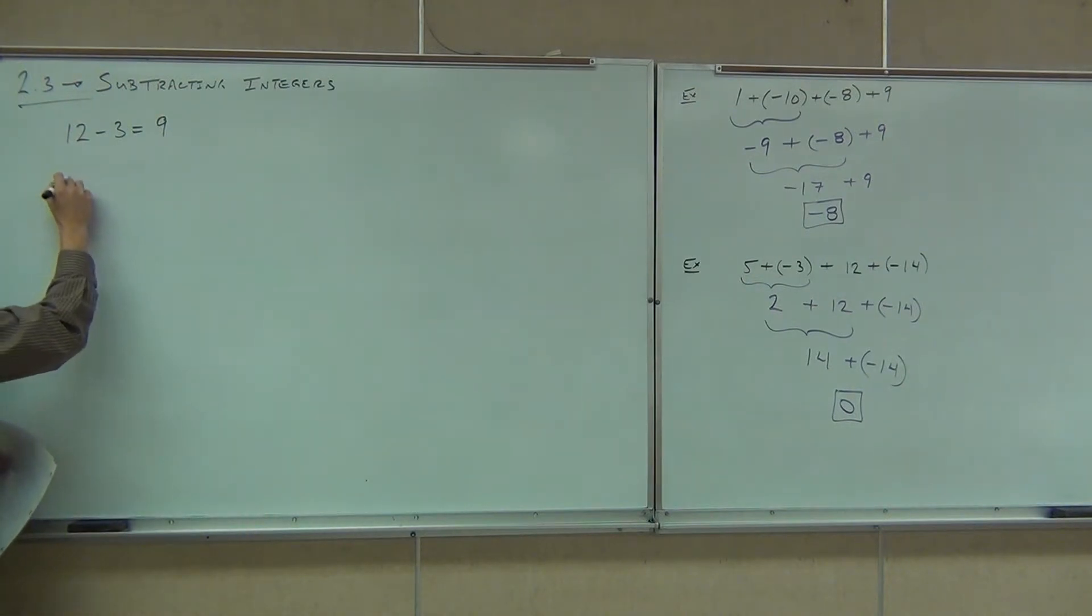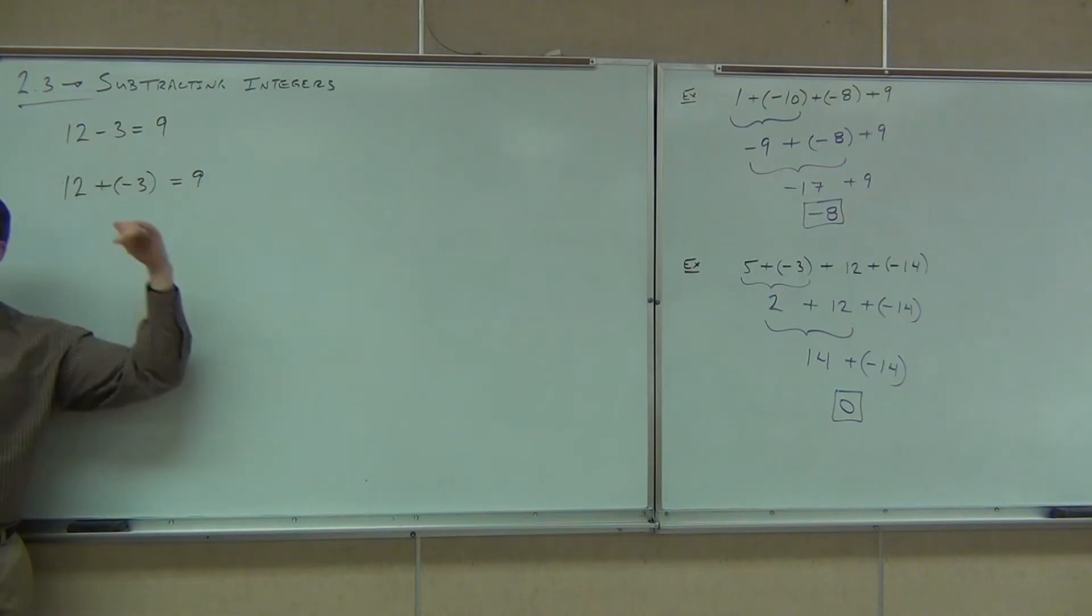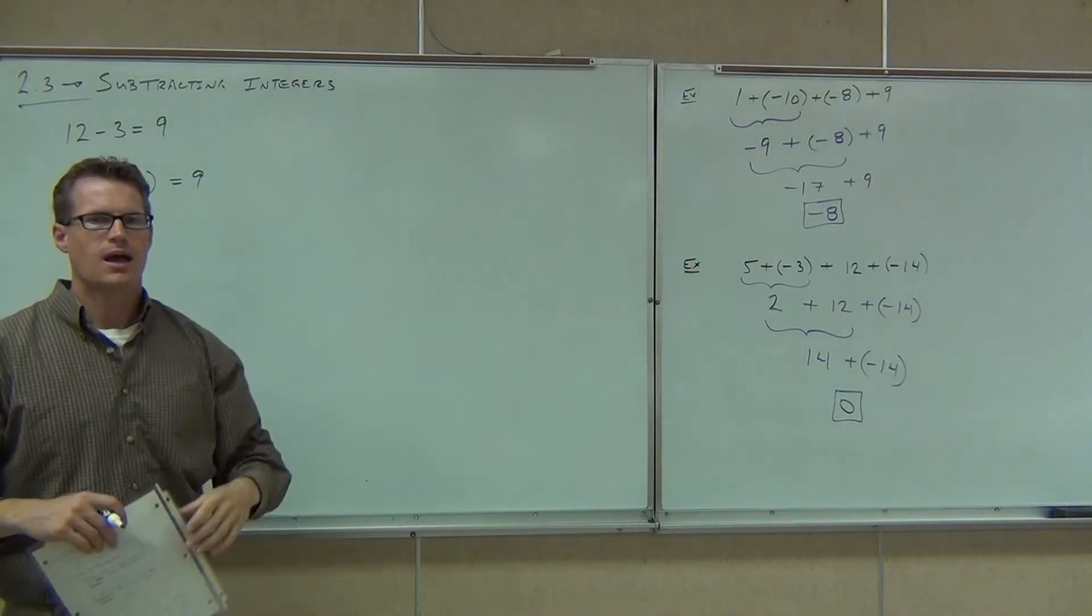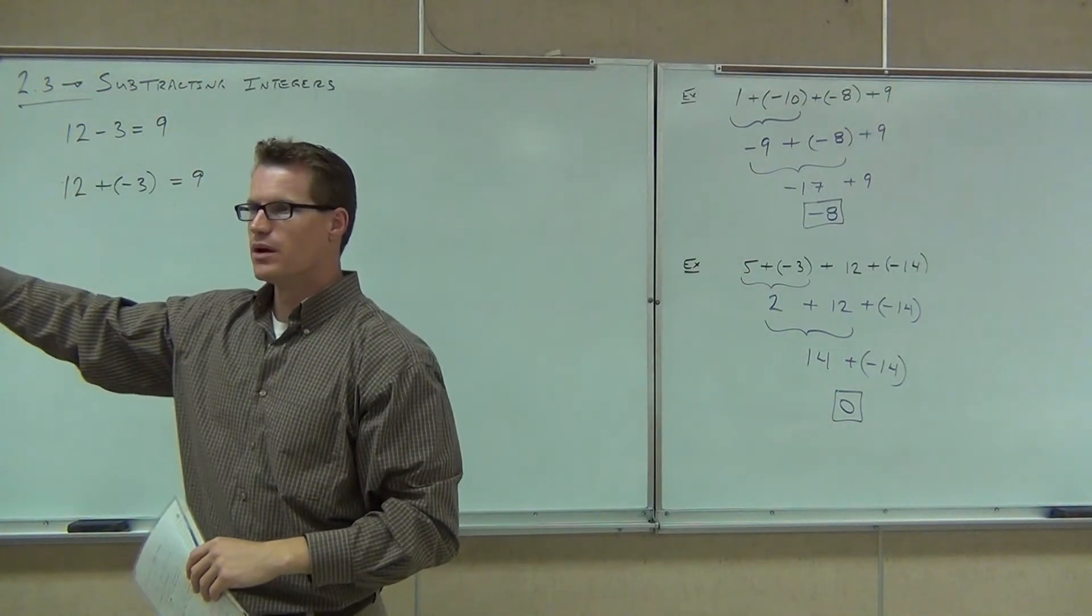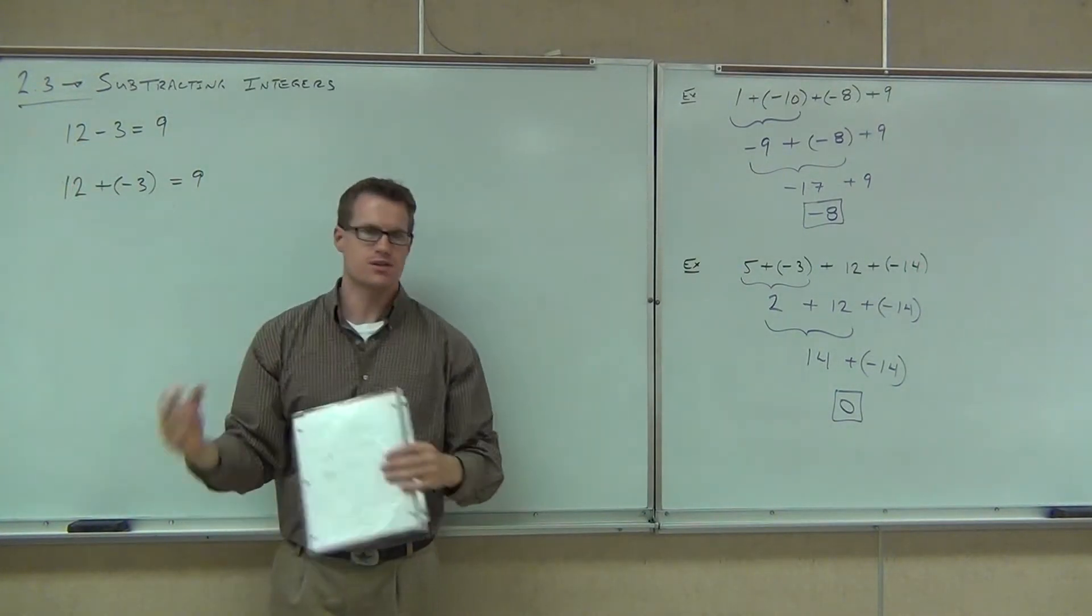I want you to figure out what 12 minus negative 3 equals. Hey look, that has a plus now, right? Plus means you can use addition rules. Does this have the same sign or different signs? Different. Does that mean add or subtract? Subtract. Keep the sign of the? Large. What are we going to get? Positive 9. Weird. Here's what this says. It says that subtraction is mathematically equivalent, that means the same exact thing, as adding the opposite of the original number. Subtraction and adding a negative are the same thing.